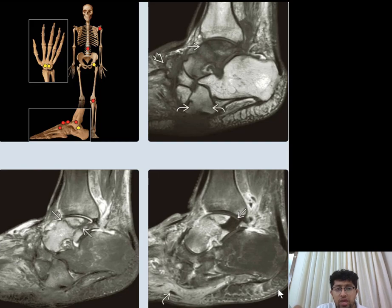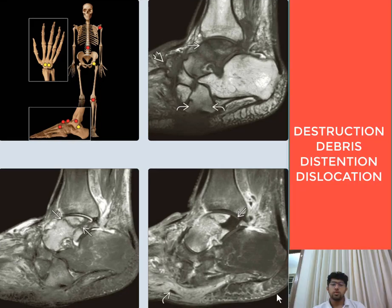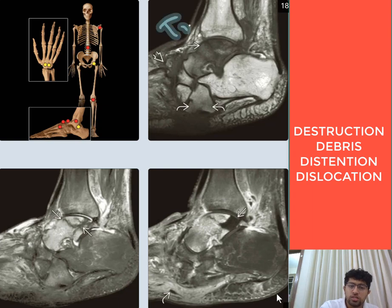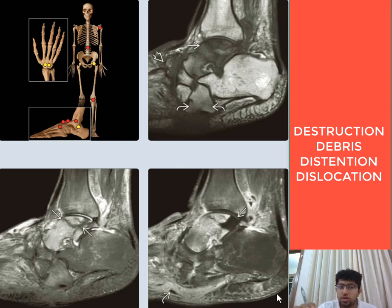Based on the location, the cause can be defined. Distension, destruction, debris, and dislocation are the classical features seen in Charcot's joint. In this T1-weighted MRI image, we are looking at a diabetic Charcot's joint because the ankle is involved, which is more commonly affected in diabetic patients due to diabetic neuropathy.